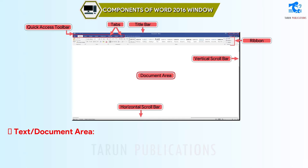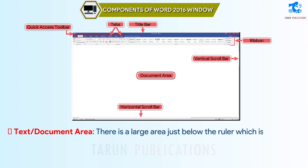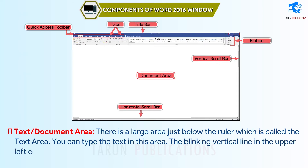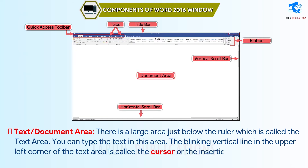Text Document Area: there is a large area just below the ruler which is called the text area. You can type the text in this area. The blinking vertical line in the upper left corner of the text area is called the cursor or the insertion point.